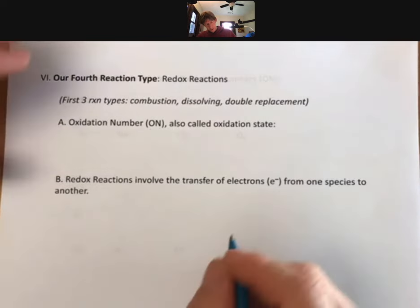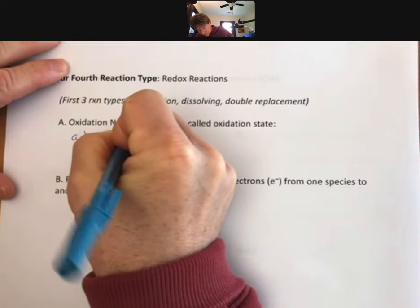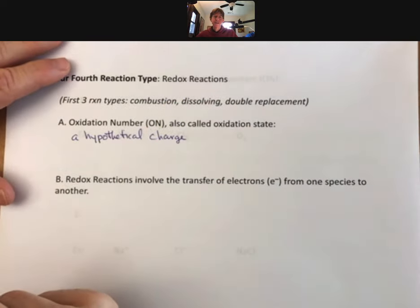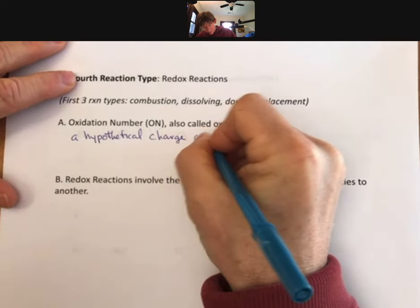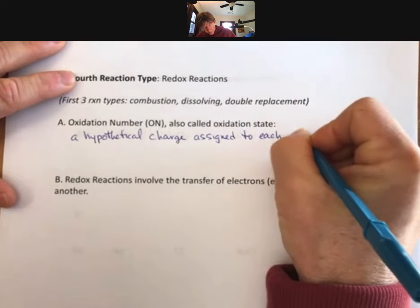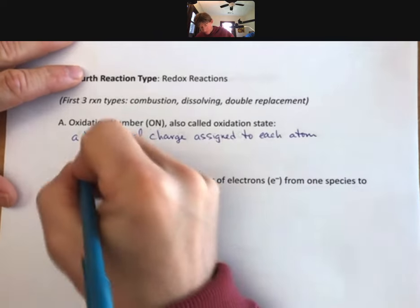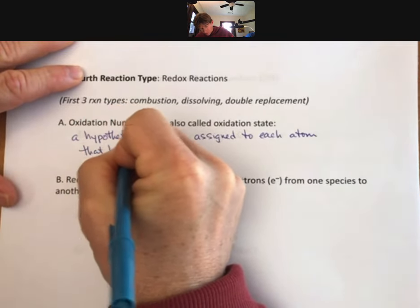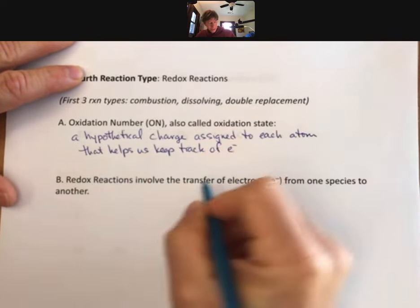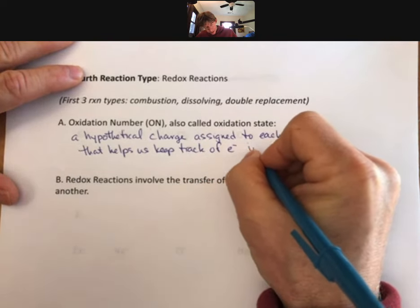The oxidation number is a hypothetical charge assigned to each atom that helps us keep track of electrons in a reaction. My symbol for electrons is E superscript minus. Keep track of electrons in a reaction.